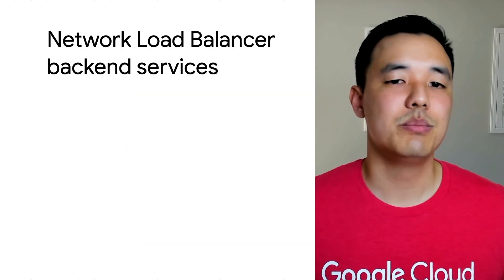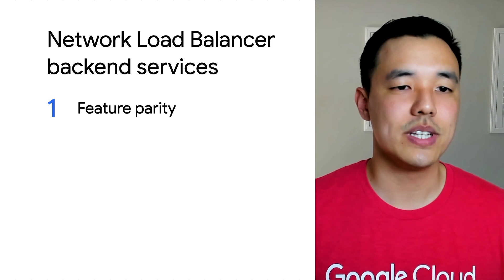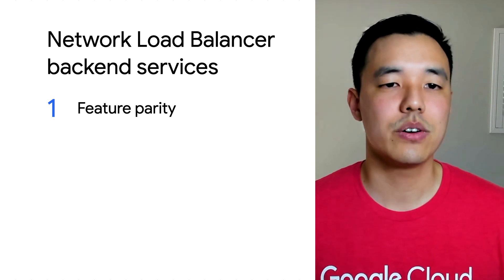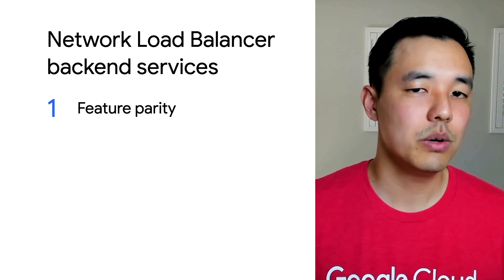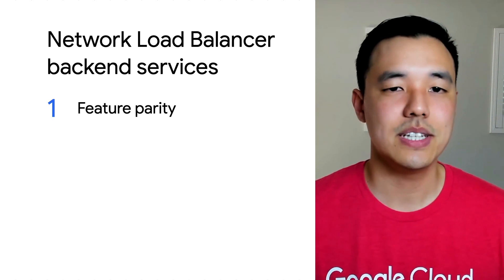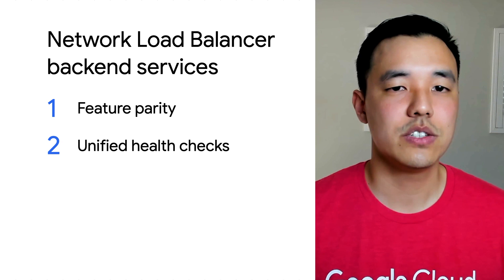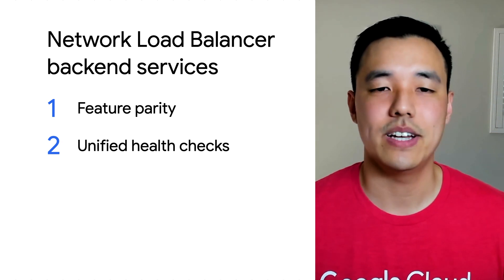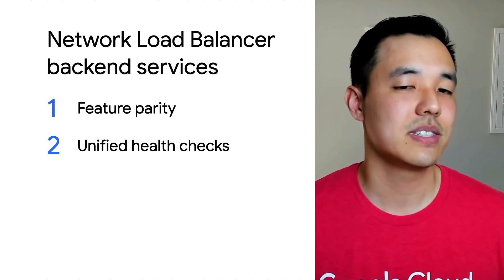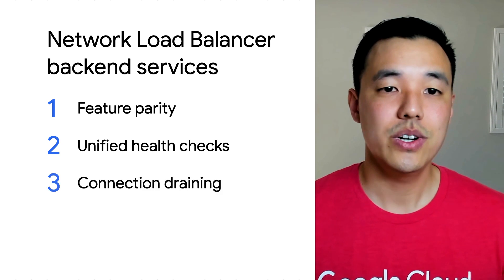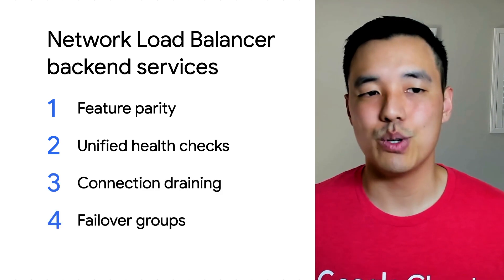So what does this launch mean? First, this launch gives feature parity for the same back-end services as other Google Cloud load balancers, like our global load balancer or our TCP and SSL proxy load balancer. Second, it transitions from legacy health checks to unified health checks, which allows you to configure TCP health checks. Third, it enables connection draining. And lastly, it enables failover groups.